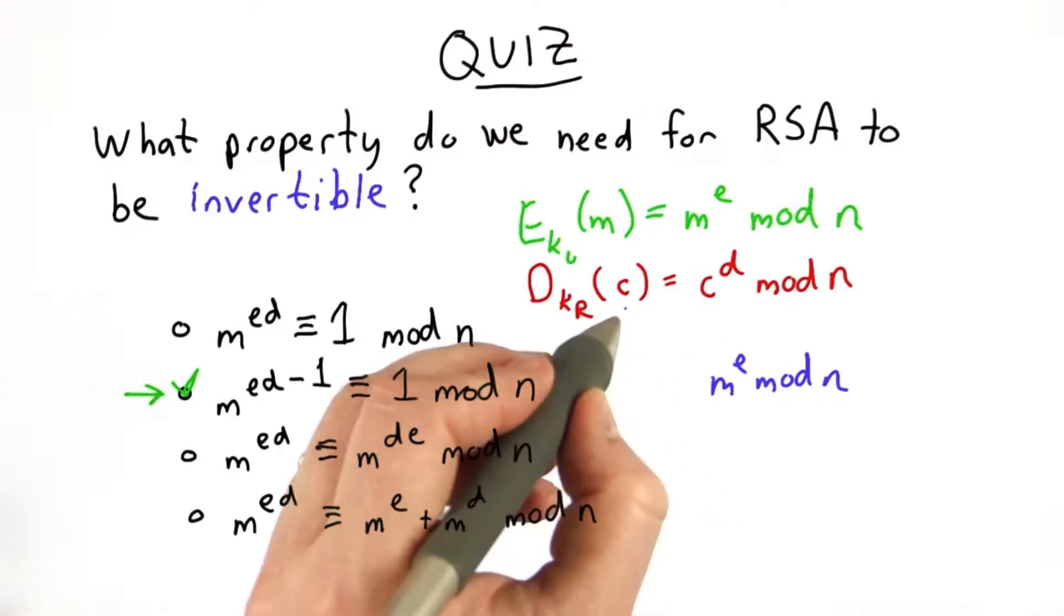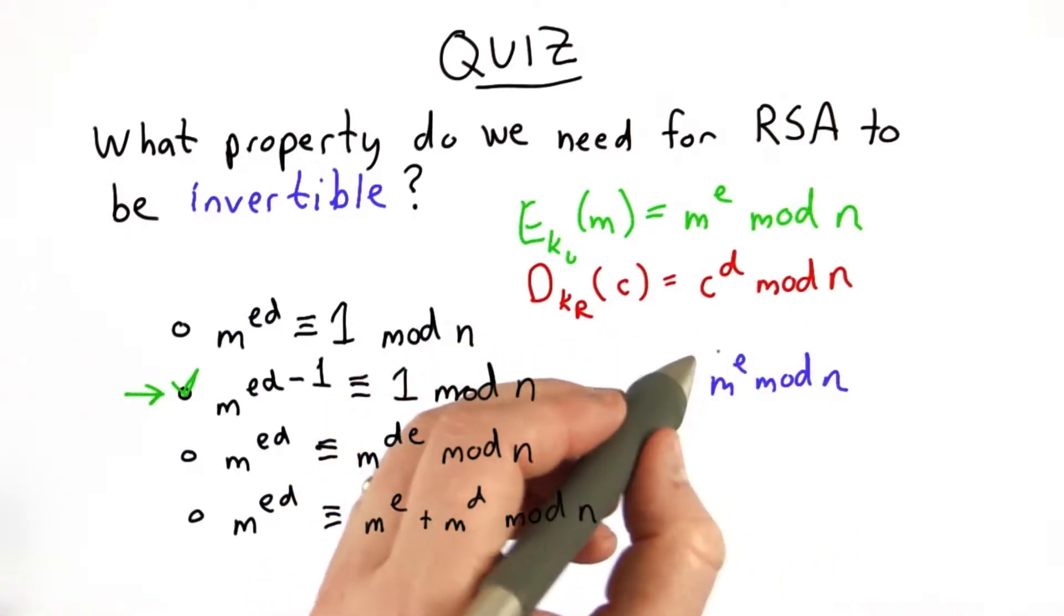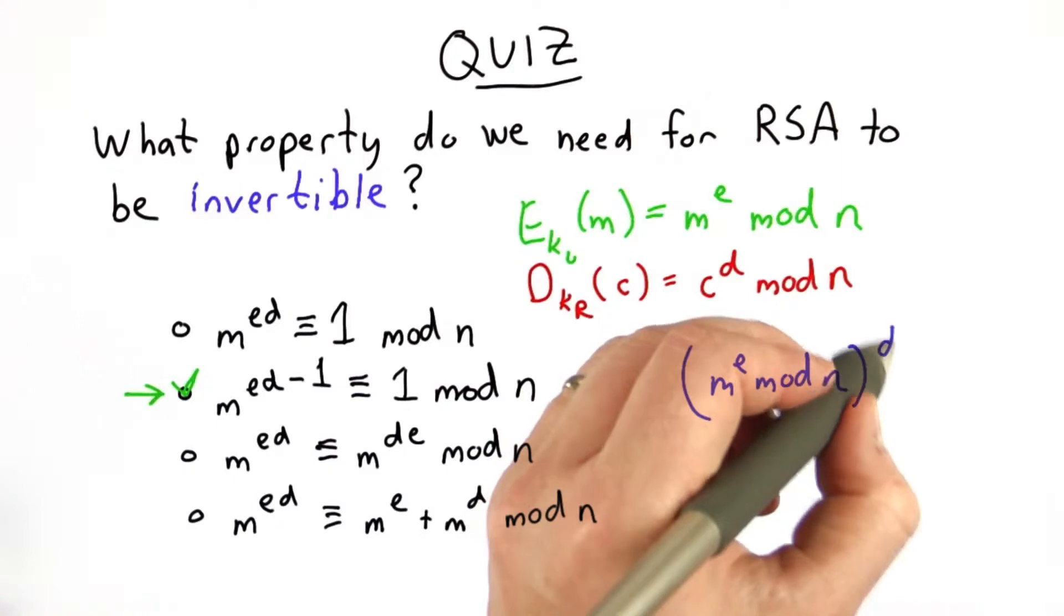Then to decrypt it, this is what goes in as the ciphertext. We're going to raise this to the d power mod n.